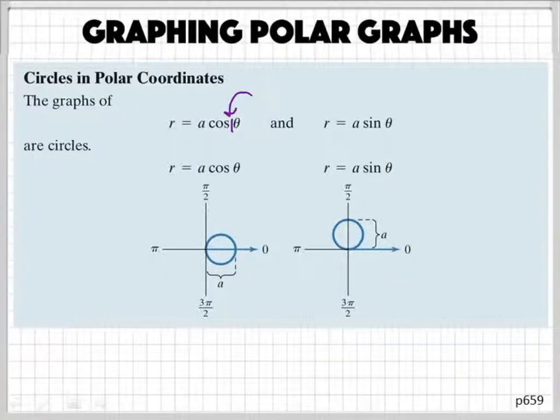Okay, so it helps to note that the cosine goes around the x-axis and the sine goes around the y-axis. And we could change where this circle is. Like this circle can be down here if a is negative. But this type of polar graph is pretty basic.